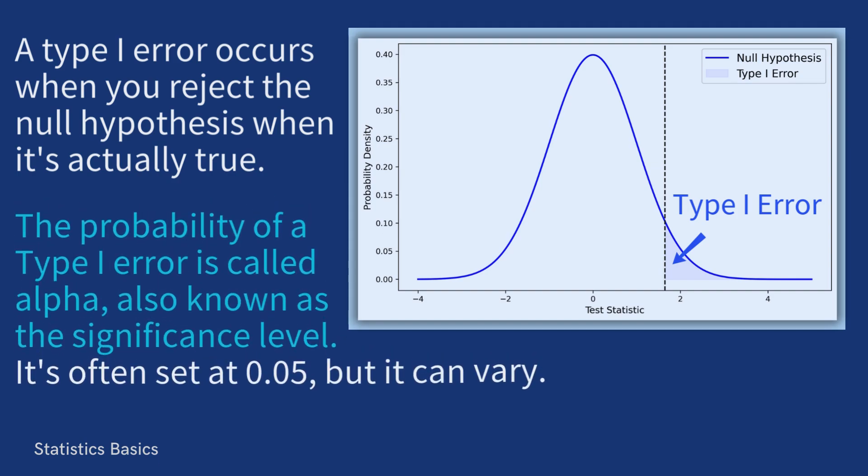The probability of a type 1 error is called alpha, which is also known as the significance level. It is the threshold you set before performing the hypothesis test to make a decision about the null hypothesis.